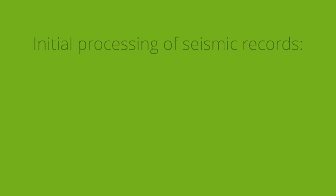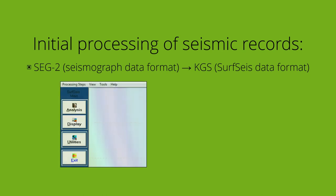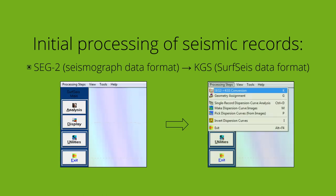Data processing begins by uploading SEG2 field records into SurfSays. Records are converted into KGS format, which is recognizable by the program.